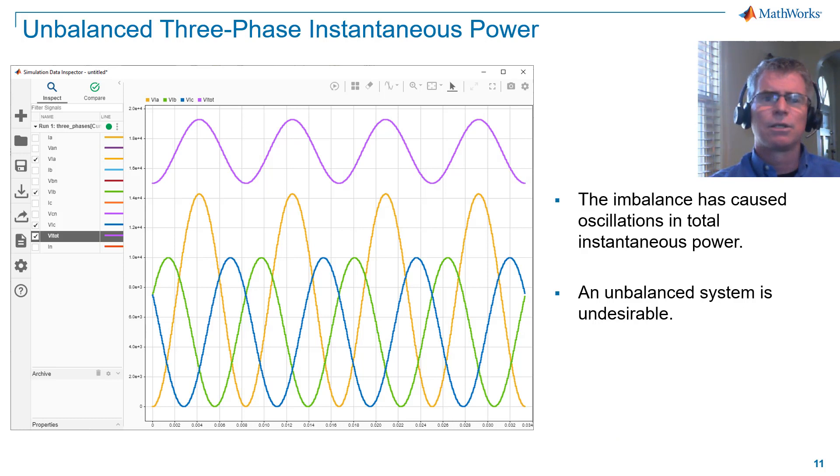The imbalance has caused oscillations in total instantaneous power. An unbalanced system is undesirable for a number of reasons. The oscillation in total delivered power is one of those reasons. For example, if we're driving a three-phase motor, the imbalance would cause mechanical oscillations and uneven heating of the motor currents.